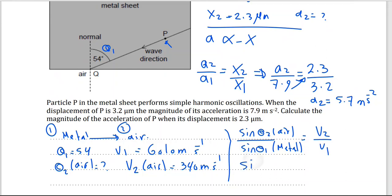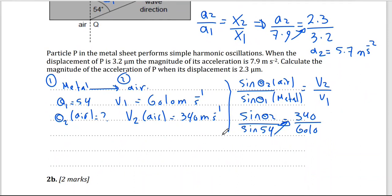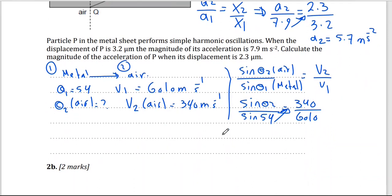So sine theta 2 over sine 54 will equal 340 divided by 6010. Cross multiplication and take sine inverse for both sides. So theta 2 will equal sine inverse of sine 54 times 340 divided by 6010. You should get 2.6 degrees.